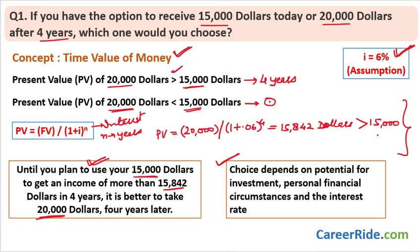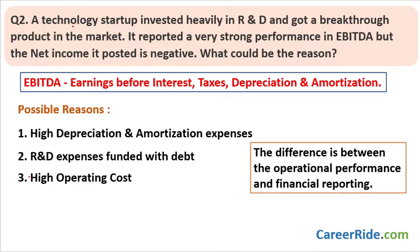If required, you can replay this part of the video and take a closer look at everything explained here. Our question number two is: a technology startup invested heavily in R&D and got a breakthrough product in the market. It reported very strong performance in EBITDA, but the net income it posted is negative. What could be the reason? This is another very interesting question asked many times in interviews — how would you investigate it as a financial analyst?